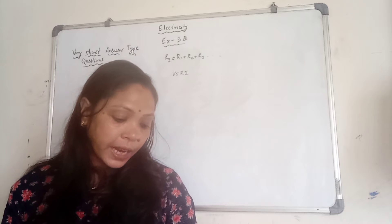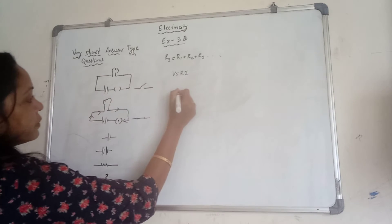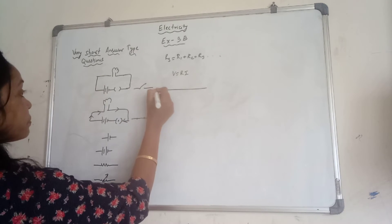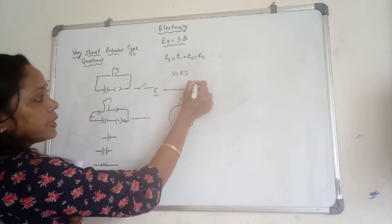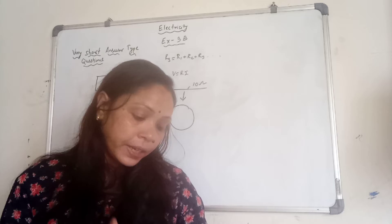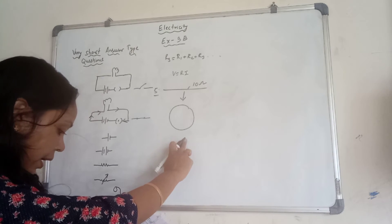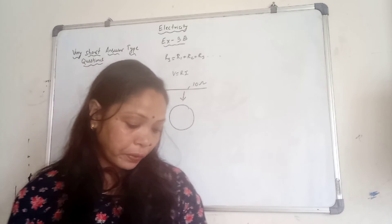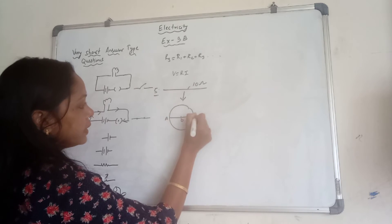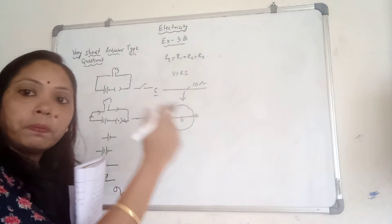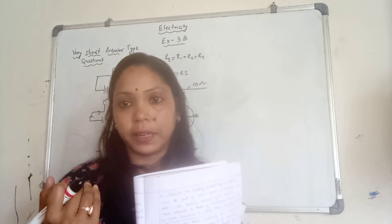Question number 5: a wire of resistance 10 Ohm is bent in the form of a closed circle. It means we have one wire. Wire and this wire you have to bend in a circle. And this wire has a resistance of 10 Ohm. And this straight wire is now bent in a circle, into a circle. What is the effective resistance between the two points at the end of any diameter of the circle?